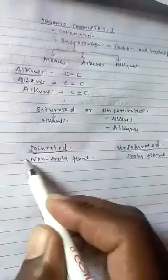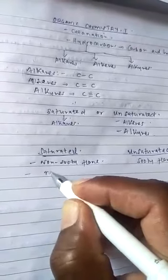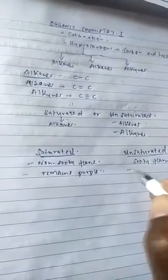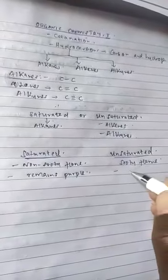Another difference is that when you add acidified potassium manganate-7 to a saturated hydrocarbon, the acidified potassium manganate-7 remains purple. For an unsaturated hydrocarbon, when you add acidified potassium manganate-7, it turns from purple to colorless. Whether it's an alkene or alkyne, because it's unsaturated, adding acidified potassium manganate-7 will turn it from purple to colorless.